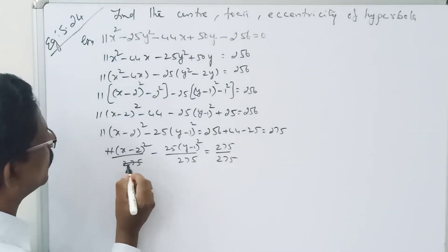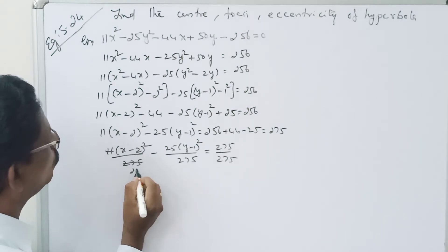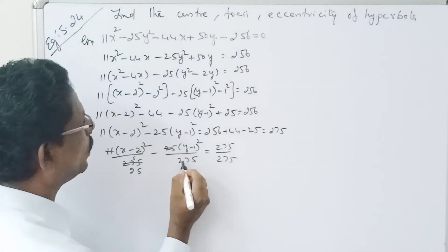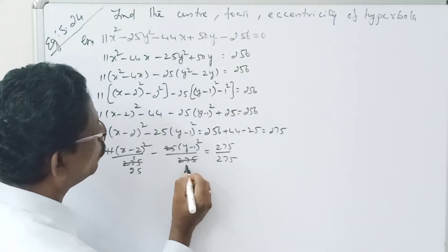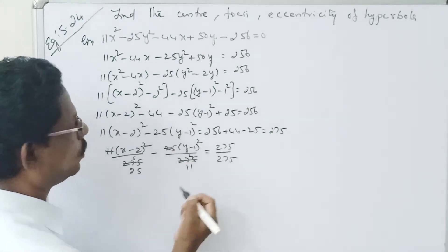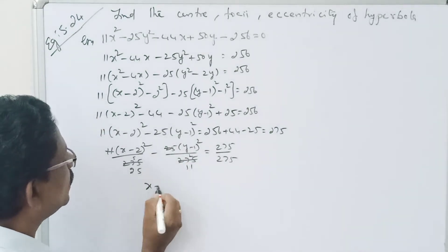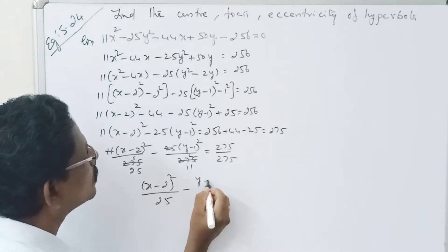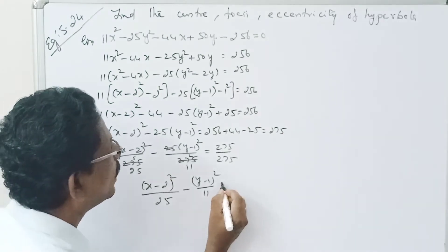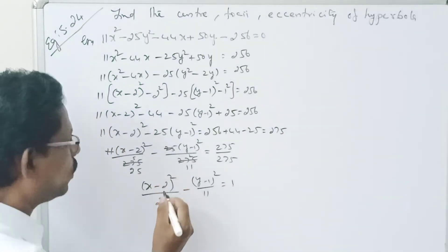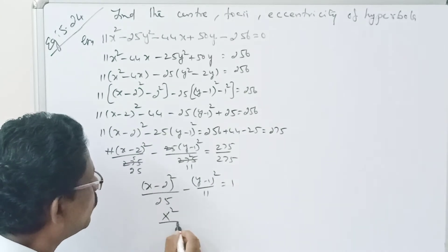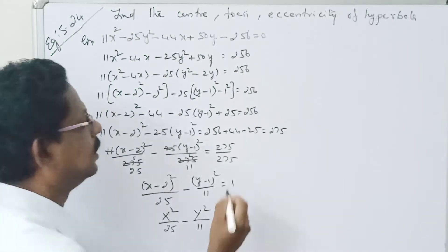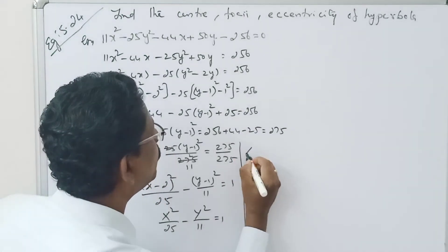Simplifying: 11/275 = 1/25, and 25/275 = 1/11. So the standard form becomes (x - 2)²/25 minus (y - 1)²/11 = 1.